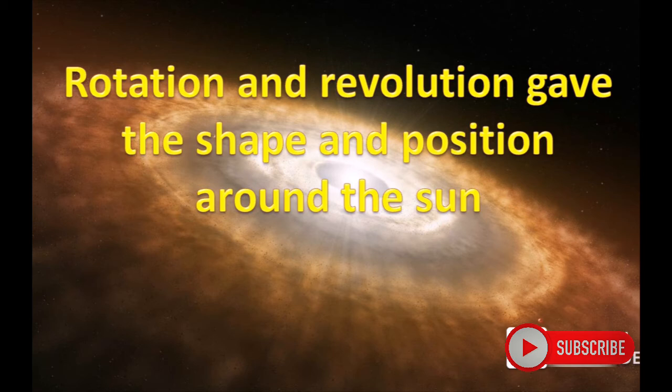Rotation and revolution gave the shape and position around the sun to these broken or separated masses of the sun.